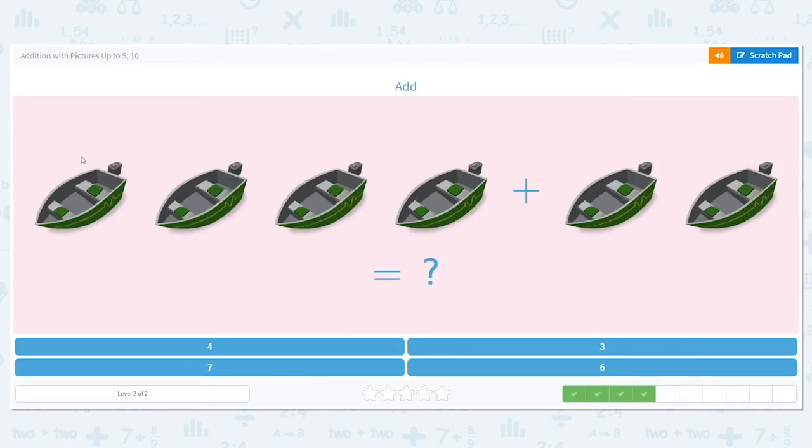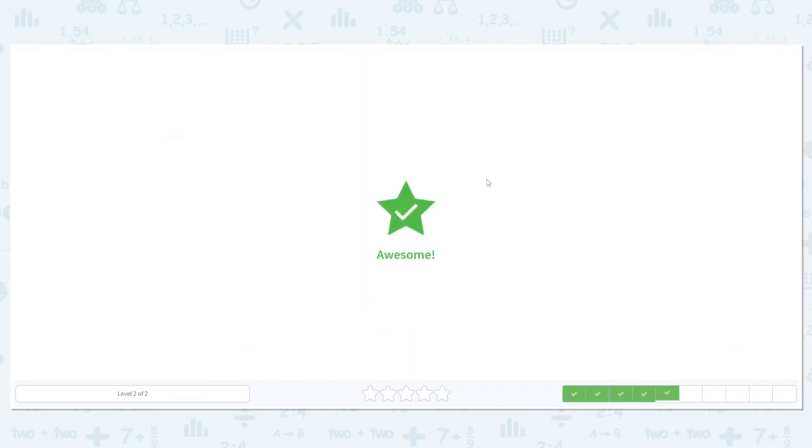Let's add here. I have 4 boats plus 2 boats. Will my answer, my sum be 4, 3, 7, or 6? So I have 1, 2, 3, 4, 5, 6. So 4 plus 2 is 6. Nice job.